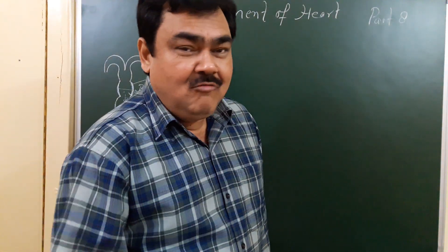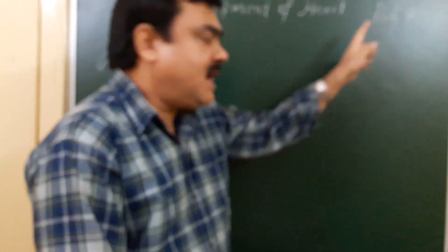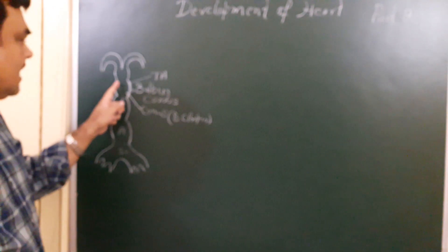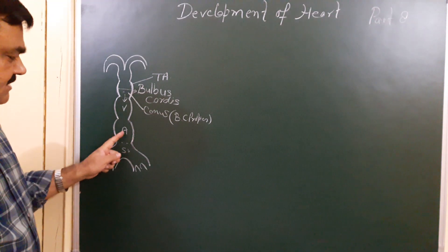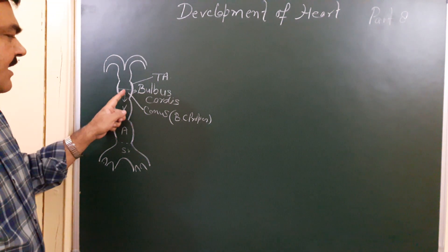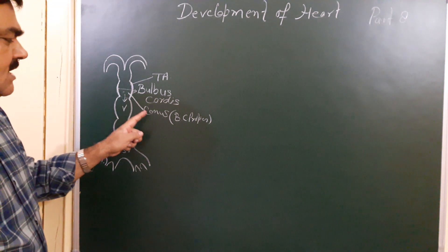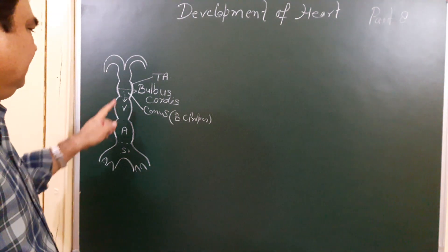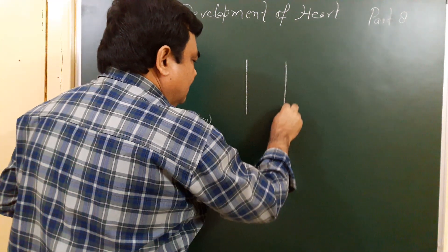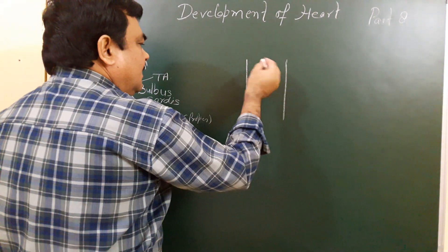Now we'll discuss the development of the heart, part 8. In this part we'll discuss the fate of the bulbus cordis. The bulbus cordis is divided into the truncus arteriosus and conus, or bulbus cordis proper. Here is a diagram showing the bulbus cordis, sinus venosus, atrium, and ventricle.